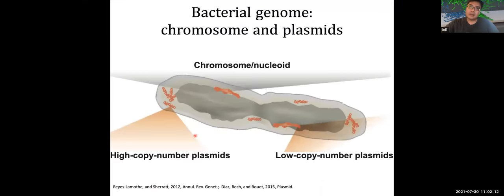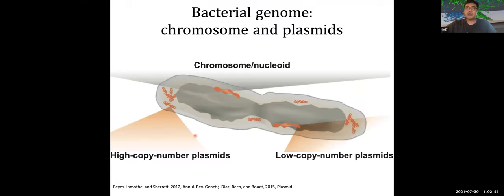Bacteria genome consists of chromosomes and plasmids. The chromosome is typically condensed into a rod-shaped structure called a nucleoid. Plasmids are extra-chromosomal genetic material that carry important genes for bacteria to cope with stress conditions. The physical partition of plasmids is important for bacterial cell survival, and from a human perspective, it is also an important target for antibiotic treatment.